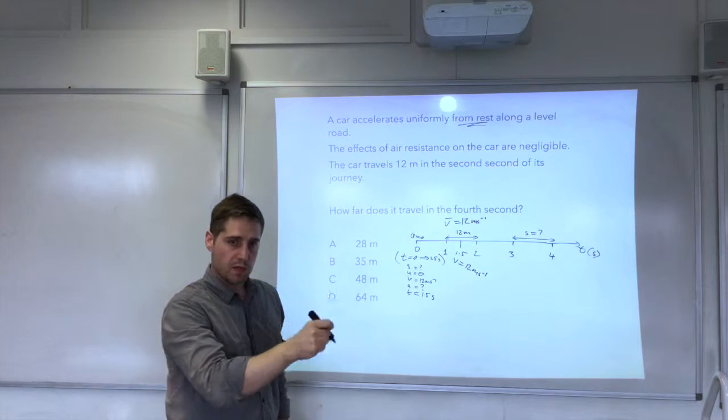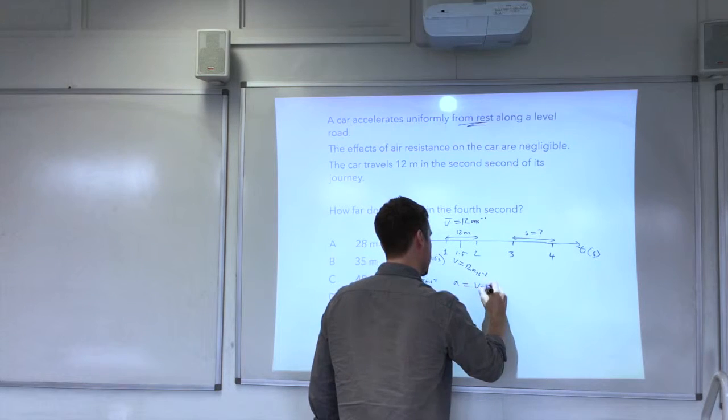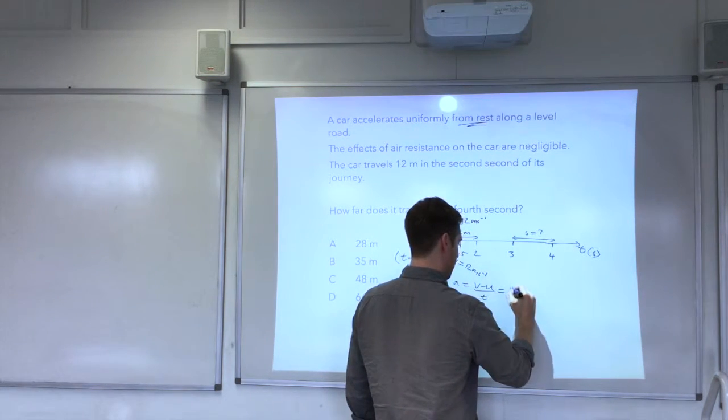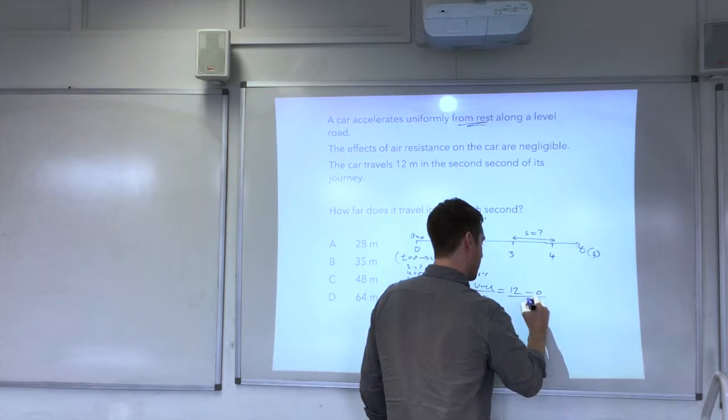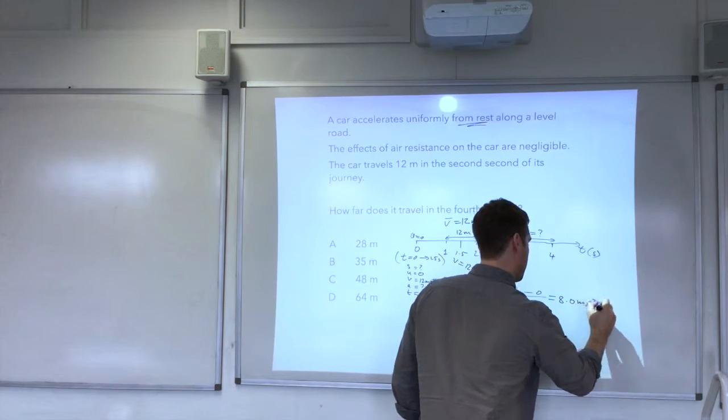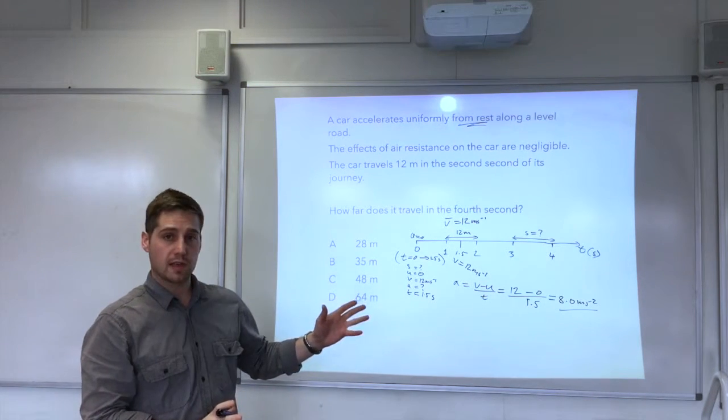We can use the equation v equals u plus a t. Rearrange for a. So a is v minus u over t and that equals 12 minus 0 over 1.5, which is 8 metres per second squared. So now that's the first stage, I know the acceleration.